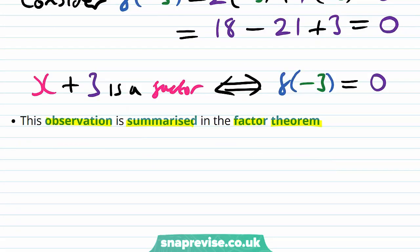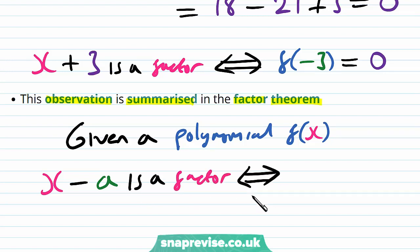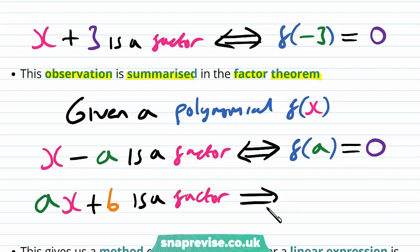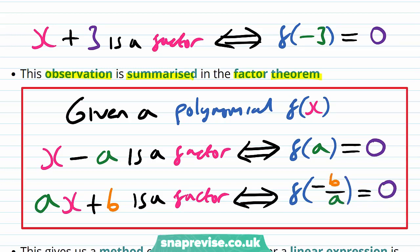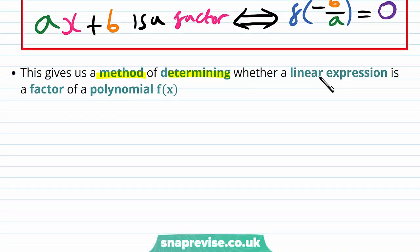So in general the factor theorem says that given a polynomial f of x, x minus a is a factor of f of x if and only if the value of f of a is 0. More generally, ax plus b is a factor if and only if f of minus b over a is 0. This is the factor theorem, and it gives us a method of determining whether a linear expression is a factor of a polynomial f of x without having to do polynomial long division.